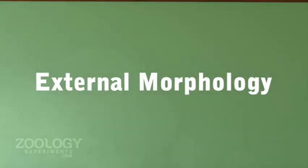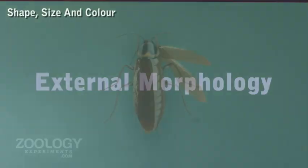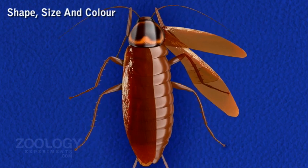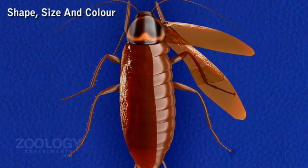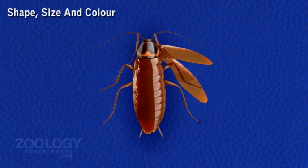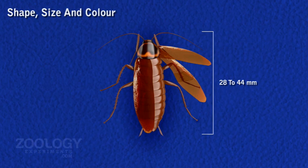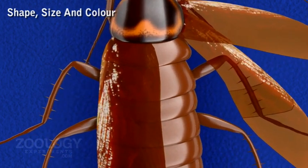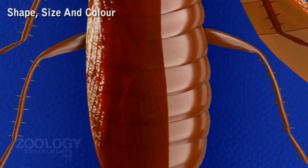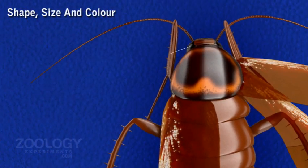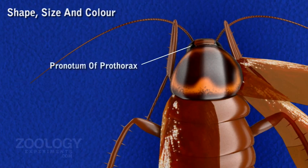External characters: shape, size and color. The body of cockroach is narrow, elongated, bilaterally symmetrical and dorso-ventrally flattened. The adult measures from 28 to 44 millimeters in length and 8 to 10 millimeters in width. The color of cockroach is shining reddish-brown with a pale yellow area around the edge of the tergum of the pronotum of the prothorax and two dark patches over it.